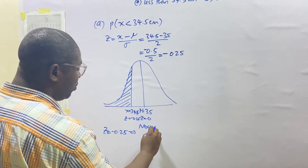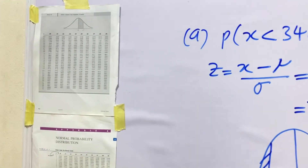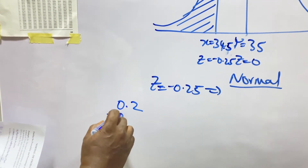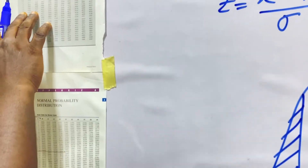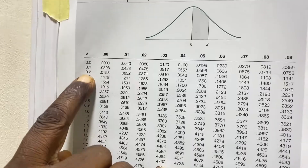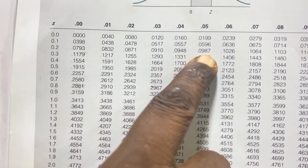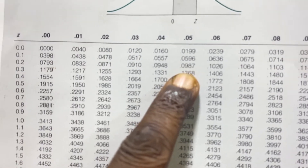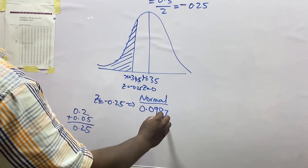Our Z-score is -0.25. When we check our normal distribution table, we look for 0.2 under 0.05, which gives us 0.0987. So the table value we get is 0.0987.